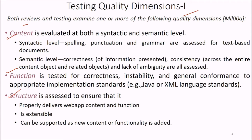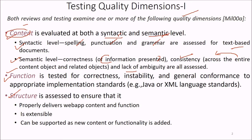Content is evaluated at both the syntactic and semantic level. Syntactic means spelling, punctuation, and grammar, assessed for text-based documents. The semantic level concerns the correctness of the information being presented, the consistency across various content objects and related objects, and any ambiguity that needs to be assessed. Then comes function, which is tested for correctness, stability or instability, and general conformance to appropriate implementation standards like Java or XML language standards.